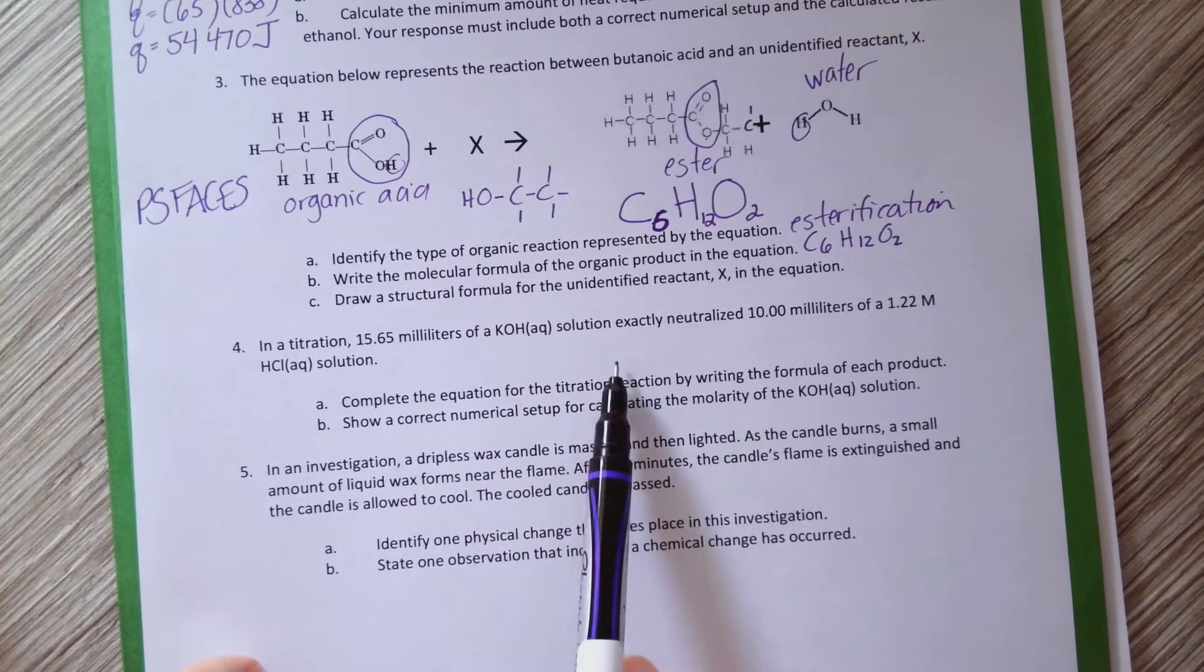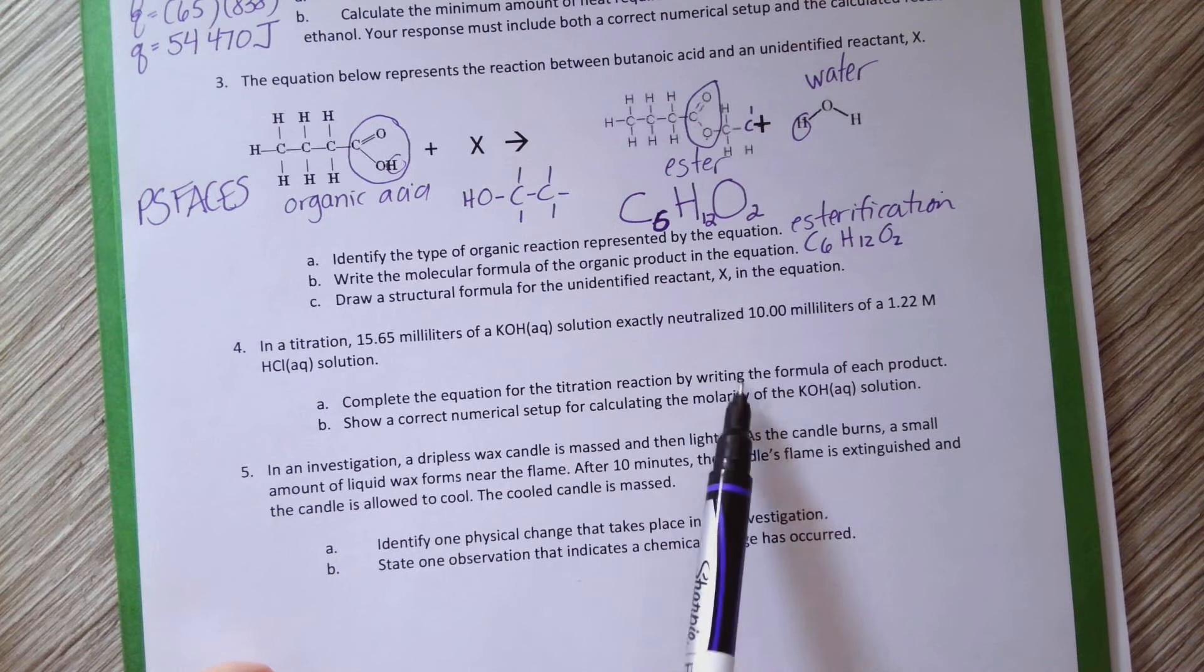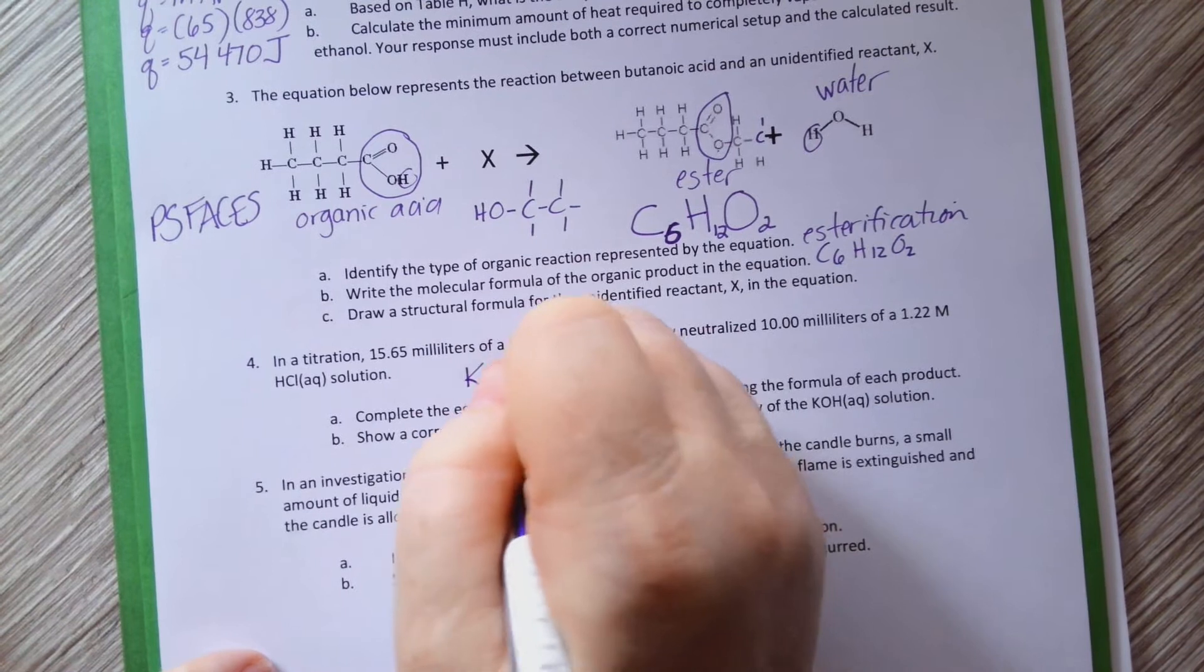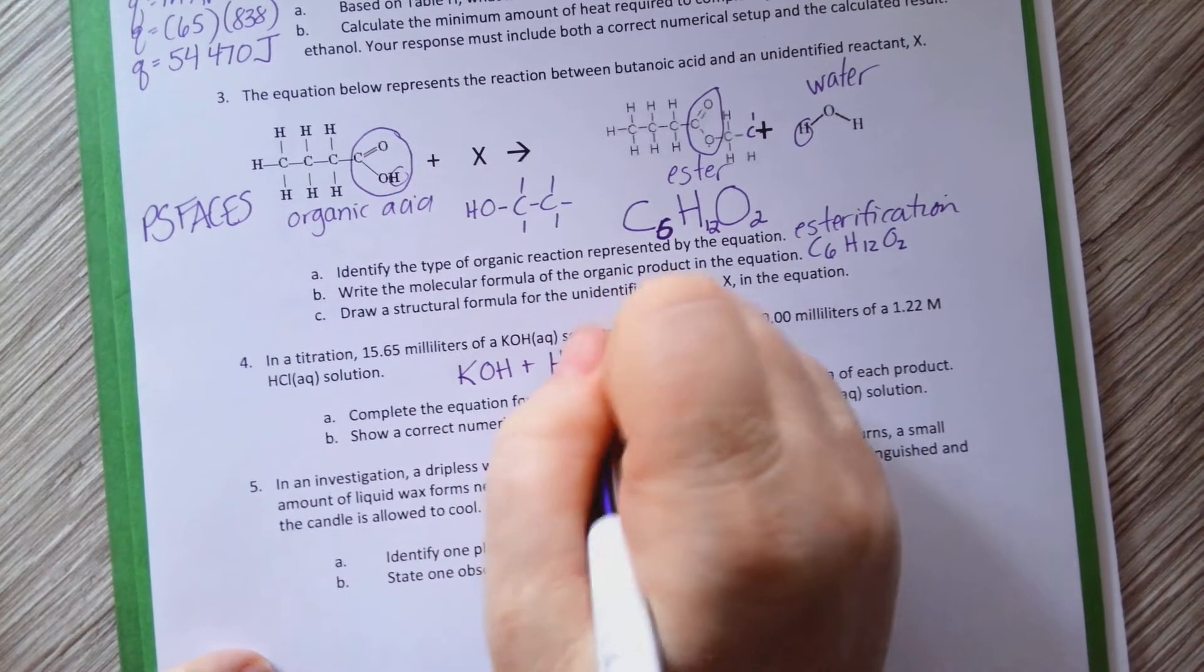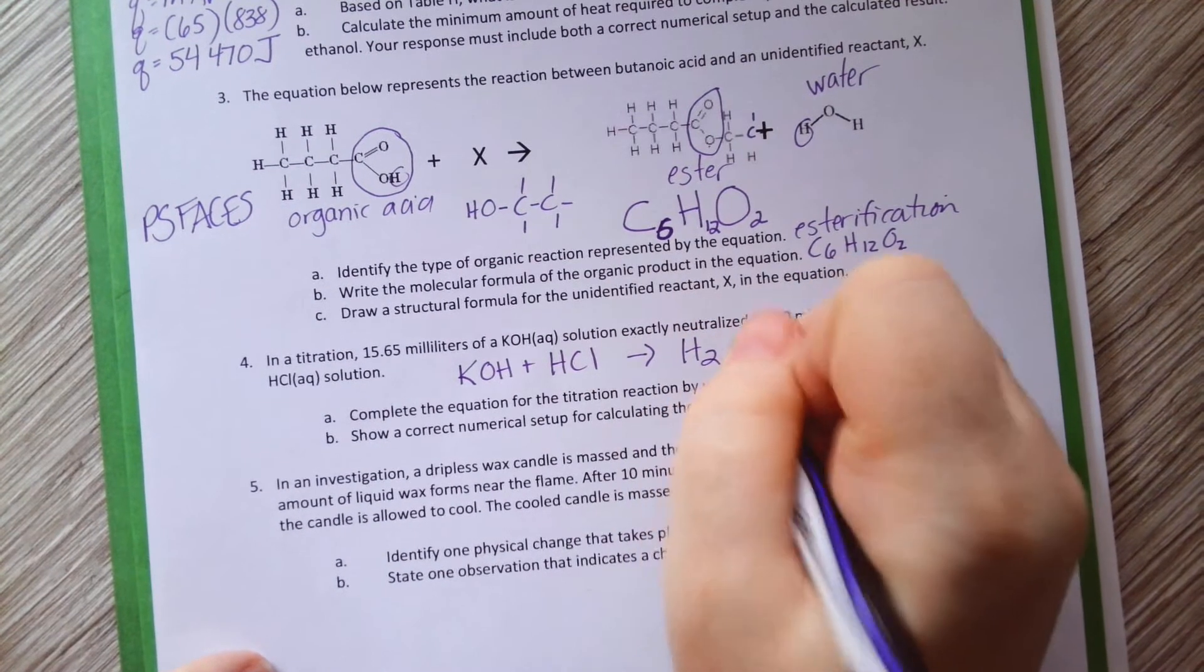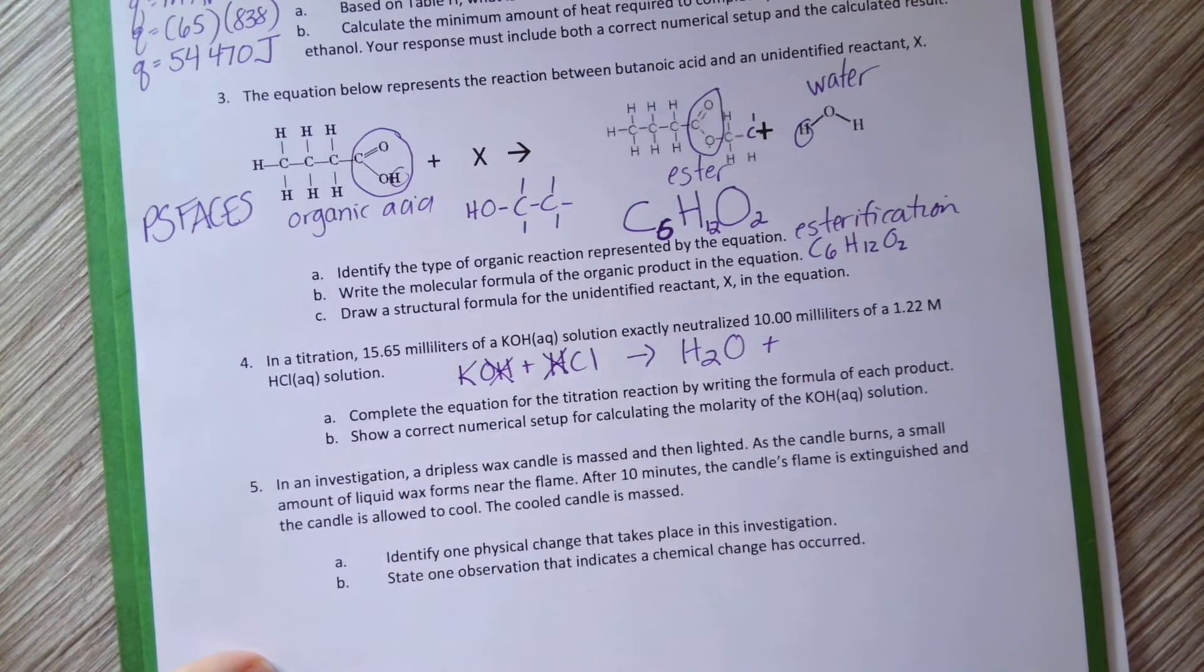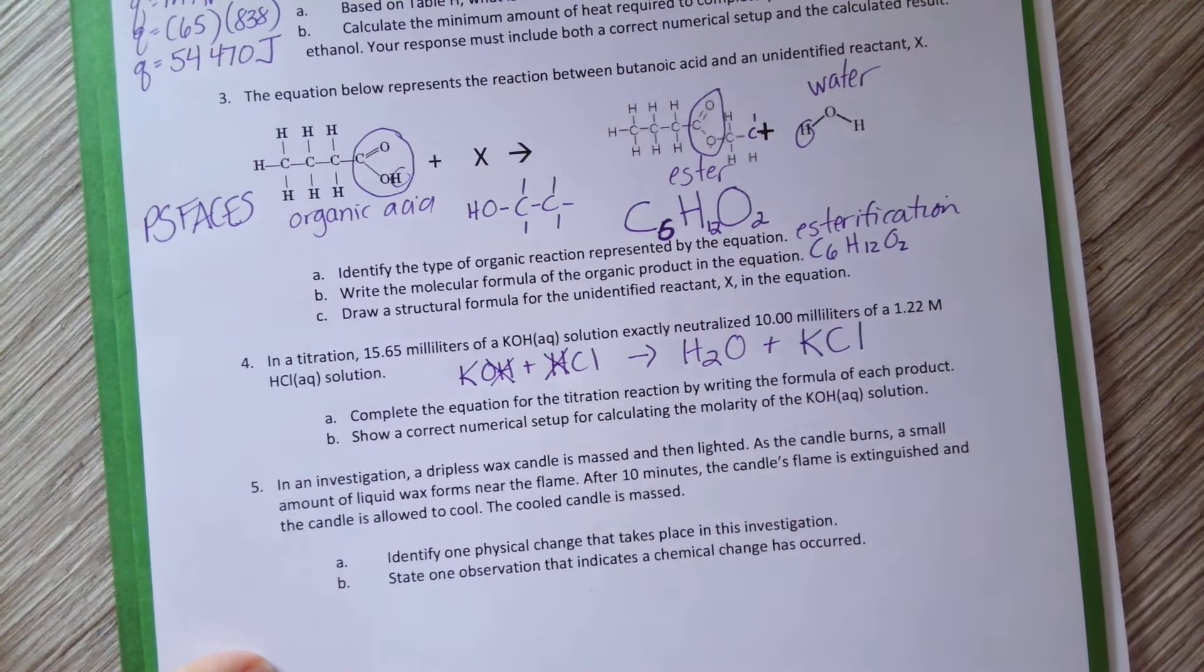All right. In a titration, complete the equation for the titration reaction by writing the formula of each product. Okay, so let's start it. KOH plus HCl. Acid plus base yields water and a salt. So what's the salt? Well, the OH and the H made the water. So what's left for the salt? KCl.